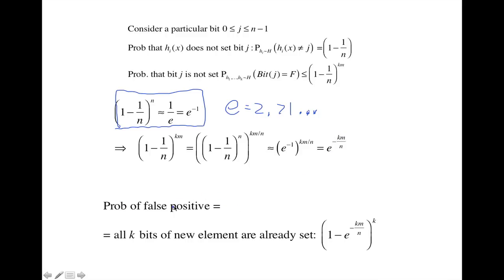Now, when do we get a false positive? If all of the k bits that we are mapped to are already set. So that probability is 1 minus e to the minus km over n. So it's 1 minus this probability, because this probability is that it is not set. And all of that raised to the k.